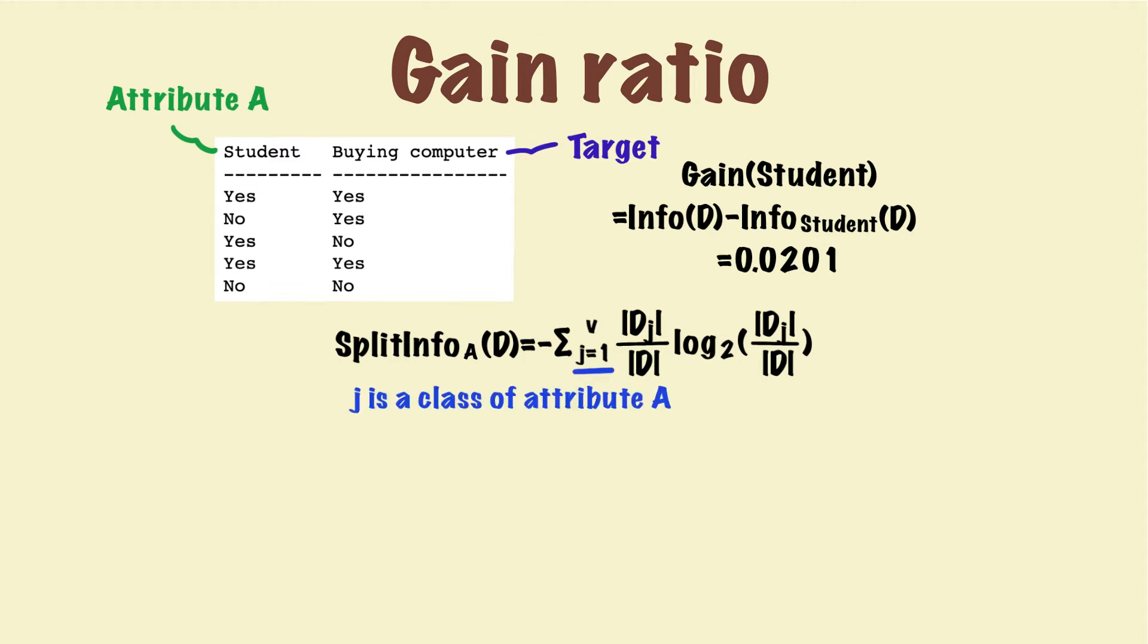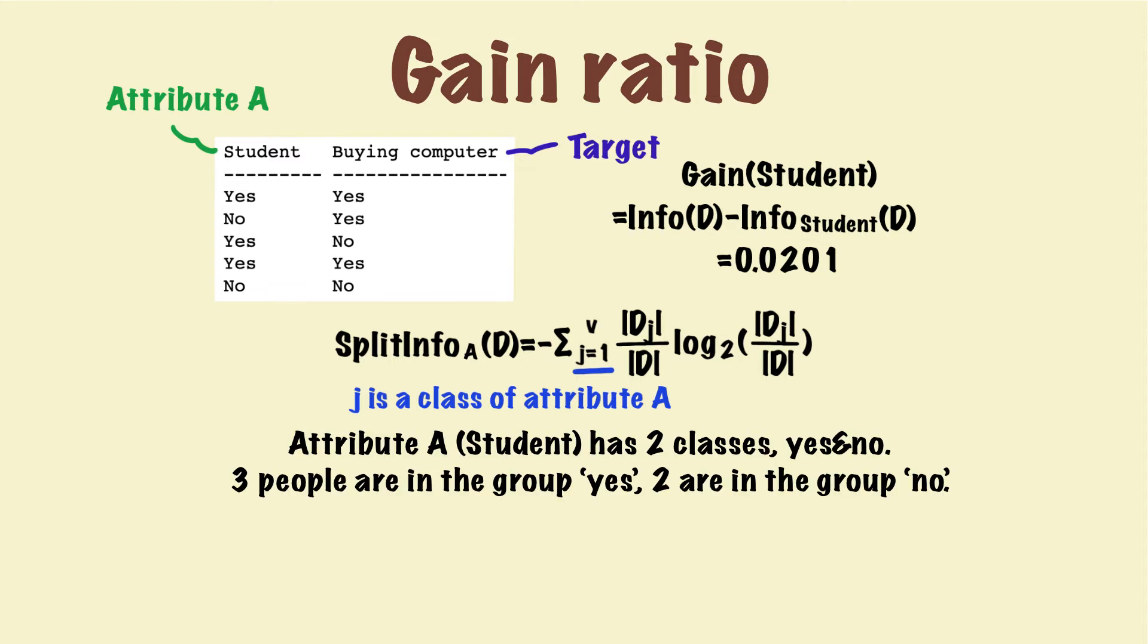To illustrate, j is a class of attribute student. So we need to know how many classes are in the attribute student. It's pretty obvious that attribute student has only two classes. And there are three people in the class yes, two people in the class no. Then we just plug in the formula and we get this split information 0.971.